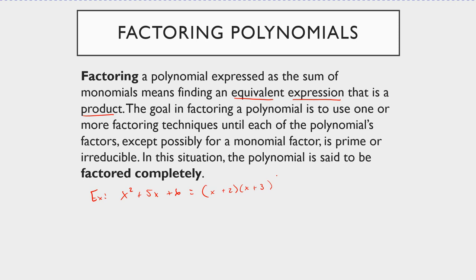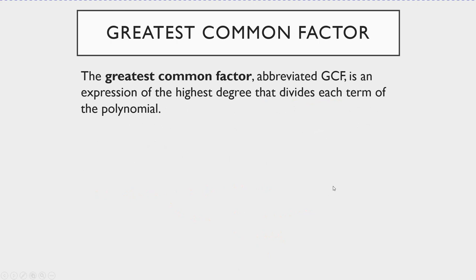The goal in factoring a polynomial is to use one or more factoring techniques until each of the polynomial's factors, except possibly for a monomial factor, is prime or irreducible. Looking at x plus 2 times x plus 3, I can't simplify either factor anymore — the polynomial is said to be factored completely, and that's our goal. I highly encourage you as you watch these lectures to take a lot of notes, pause the lecture, and try the problem yourself after you see me do one or two examples.